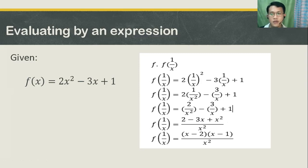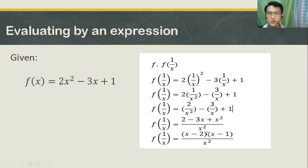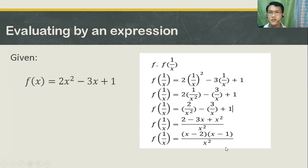As you can see, you can separate them. If your answer is 2 minus 3x plus x squared all over x squared, that's already a correct answer. And then you can still factor them out, since this is a quadratic equation — you can have the quantity of x minus 2 times the quantity of x minus 1, which is just the same. That expression is the same as x squared minus 3x plus 2. The denominator is just x squared. Therefore, our f of 1 over x is equal to the quantity of x minus 2 times the quantity of x minus 1, all over x squared. That's our answer.